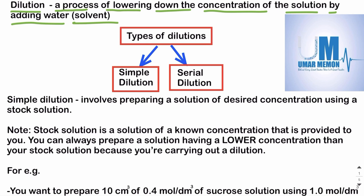Whenever we prepare a solution using dilution, the solution we are preparing will have a lower concentration compared to the stock solution. This is the rule — the concentration will always decrease because you're carrying out dilution. There are two types of dilutions: simple dilution and serial dilution.